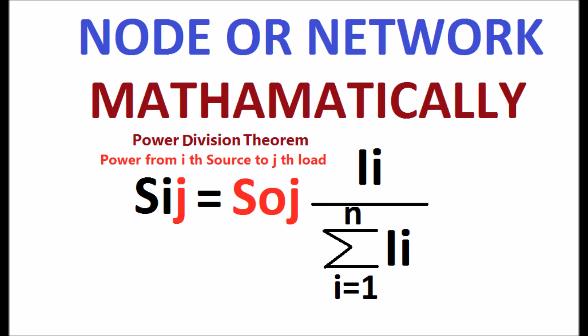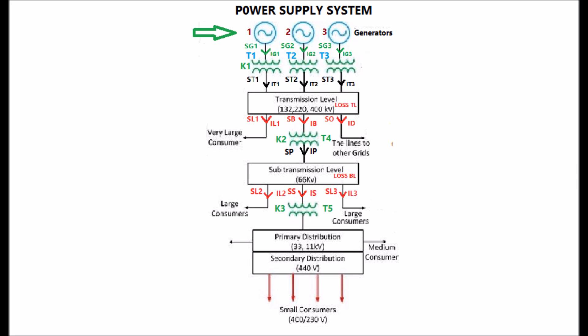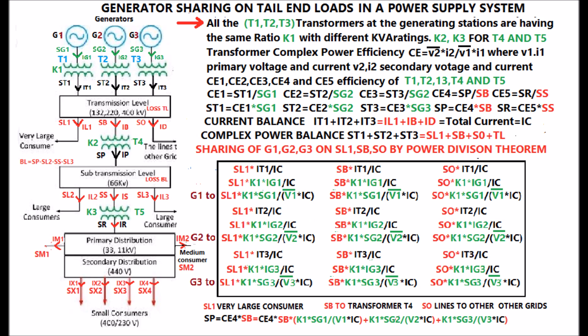The innovative Power Division Theorem gives a way to perform the calculation. Consider the general power supply system shown in the display. There are three generators connected to three step-up transformers at the generating stations. All the transformers T1, T2, T3 at the generating stations have the same ratio K1, with different KVA ratings K2, K3 for transformers T4 and T5.